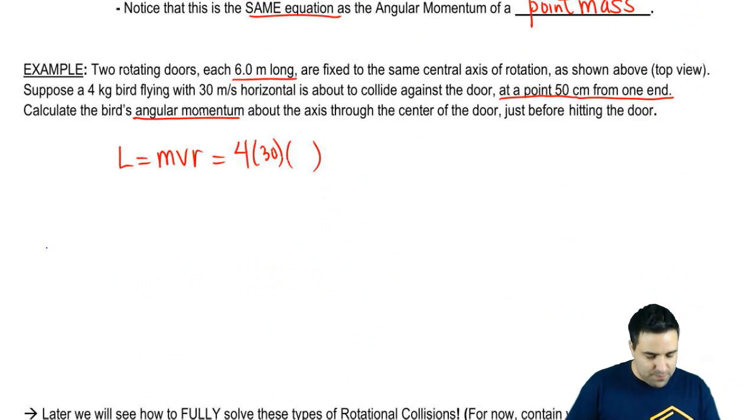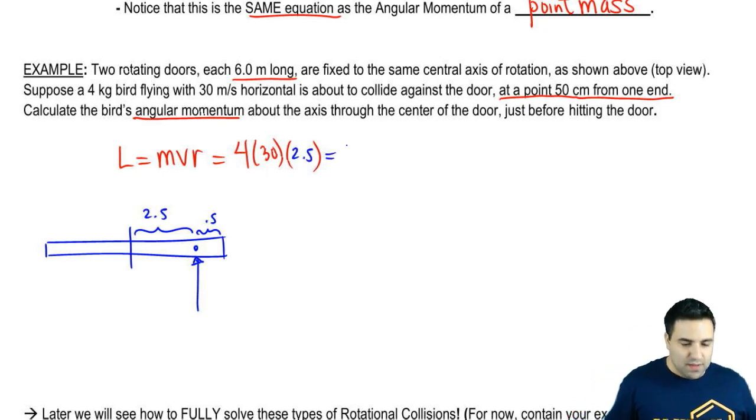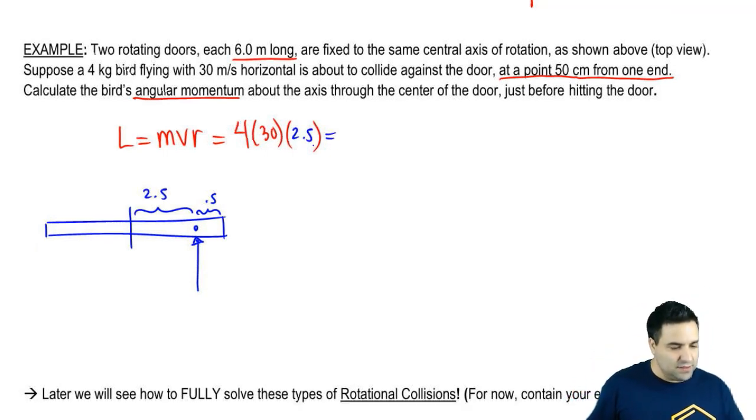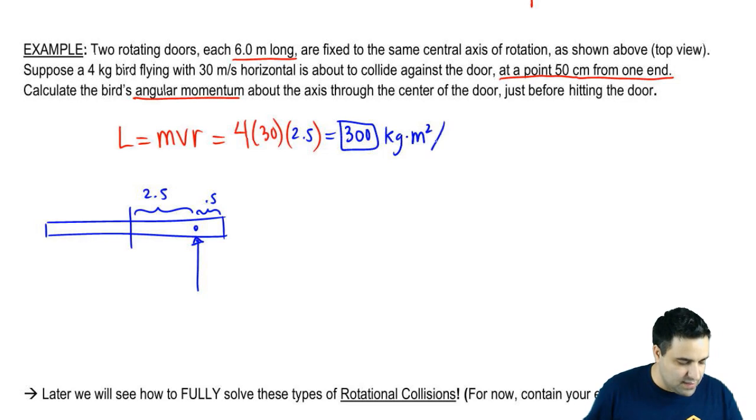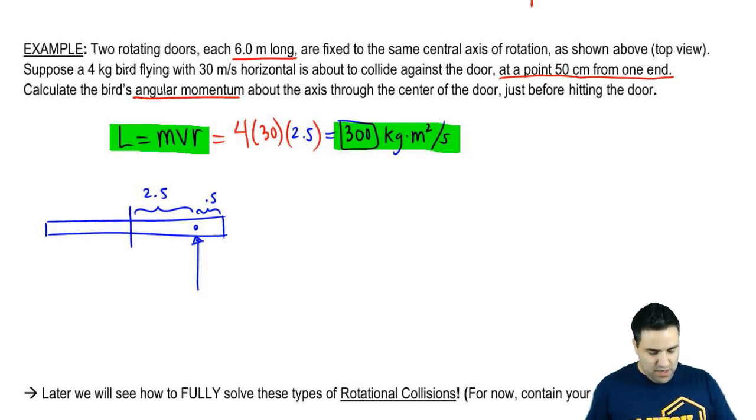So we're going to use this distance here because it collides here. So 2.5 goes right there. We multiply this whole thing and we have that this is 300 kilograms meters squared per second. That's it. Just straightforward. Plug it in here.